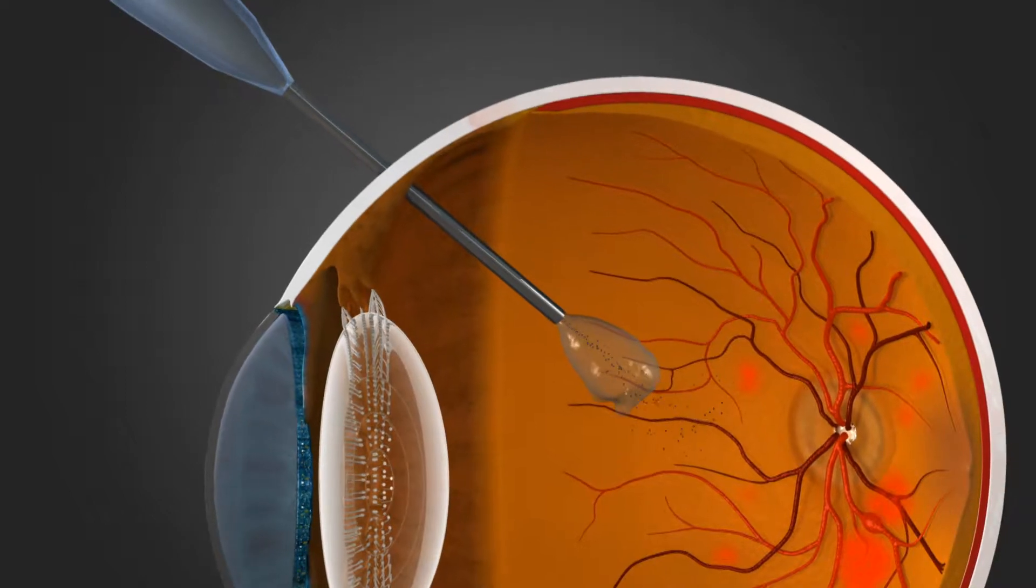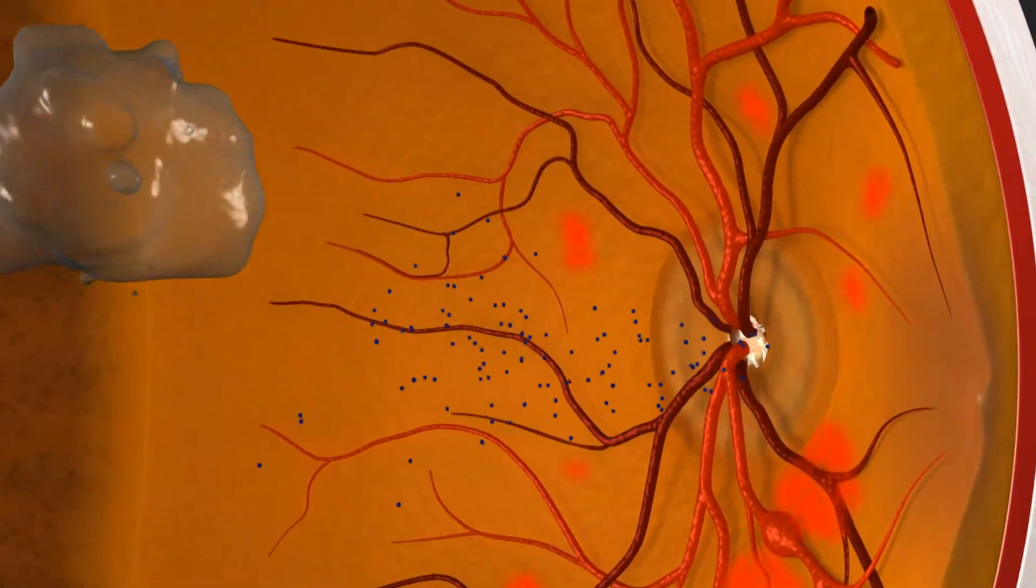Anti-VEGF medication is then injected, which will diffuse through the vitreous and into the retina.